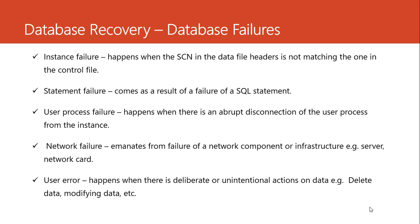The first failure that could happen to our database is the instance failure. This happens when there is a mismatch in the system change numbers. Remember the control file and the data file headers are being updated by the checkpoint process. Whenever there is a movement of data from the database buffer to the data file, the checkpoint process updates the control file and the data file headers. This movement is tracked using system change numbers or SCN — each movement is given an ID, and the data file headers as well as the control file must have this ID.